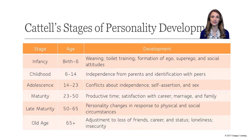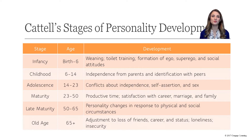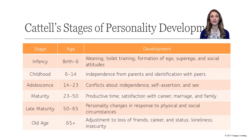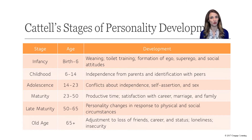Cattell proposed six stages of personality development. The first stage begins at birth and the last ends at death. In the first six years — the infancy stage — we're learning how to be more independent: trying new things, meeting new people, learning how to feed ourselves and get dressed. Between the ages of six and 14, we are in the childhood stage. This is the time when we begin to separate from our parents and identify more with our peers and social groups.